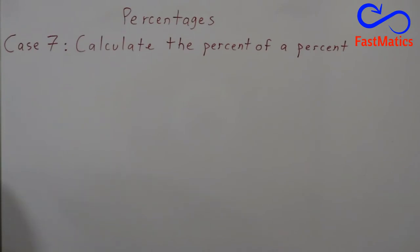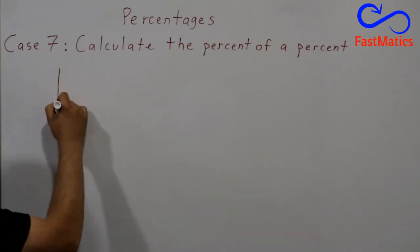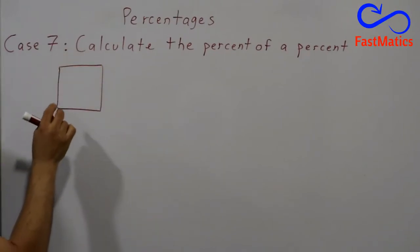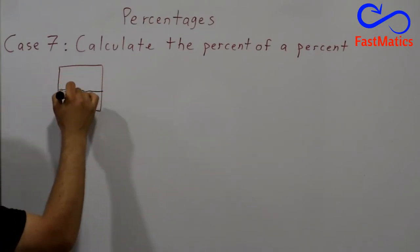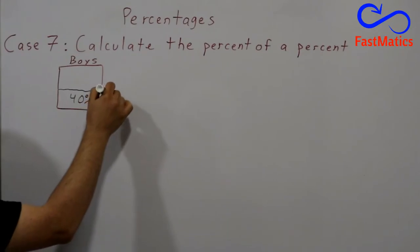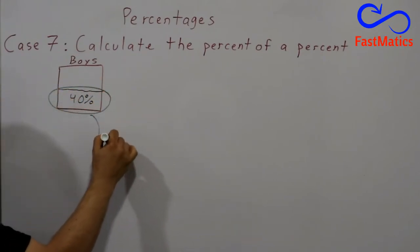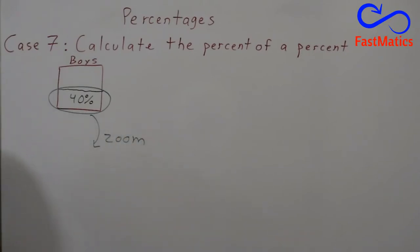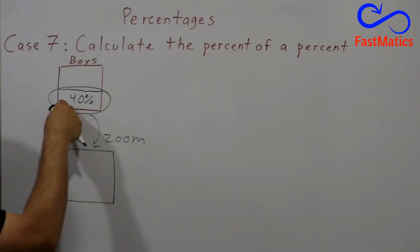So first of all, we have to understand very well this problem. First we have 100% of boys. Imagine that here we have 100 boys. Of those 100, we see that 40% of them are playing basketball. For every 100 boys, 40 play basketball. Now imagine we are zooming this section. If we zoom that square, we're gonna see that we can imagine 100% of this square.